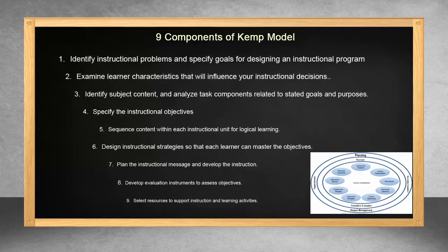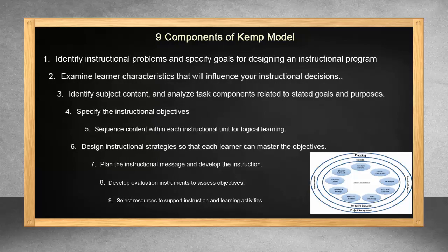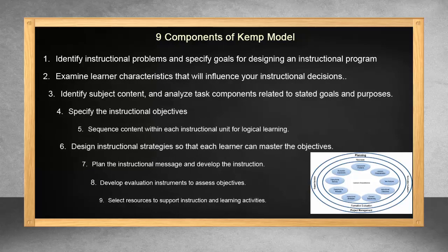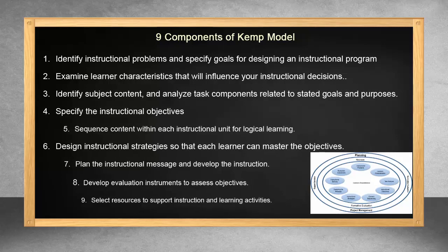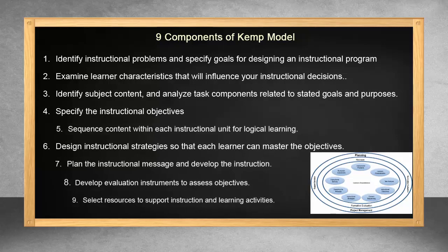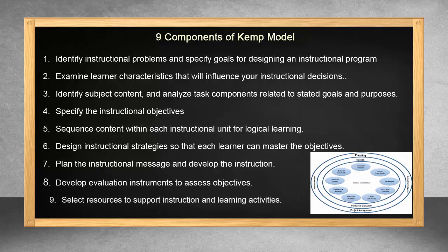As you can see from the diagram, these key elements are surrounded by two ovals. The diagram suggests that the activities described in these ovals should surround the entire process and that they should be ongoing throughout the project. For example, formative evaluation and revision, the two activities within the inner oval, should be done at each stage of the design process.